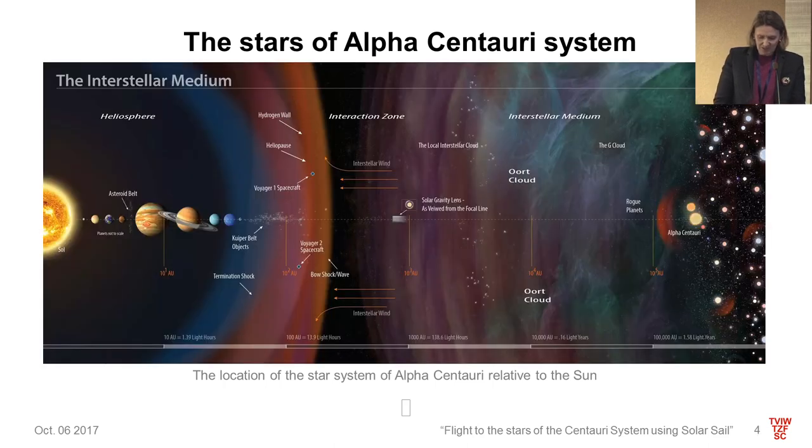The Alpha Centauri system consists of three stars. The two main components are Alpha Centauri A and Alpha Centauri B. The third star of the system, the red dwarf Proxima Centauri, is located 4.22 light years from us, and it's the closest neighbor of our sun. The binary center Alpha Centauri A and B is located at 4.37 light years from the sun. The yellow Alpha Centauri A has the same stellar type as our sun, also slightly larger.